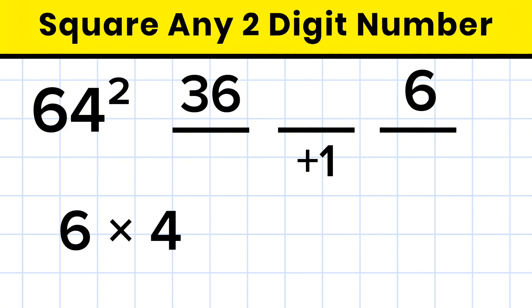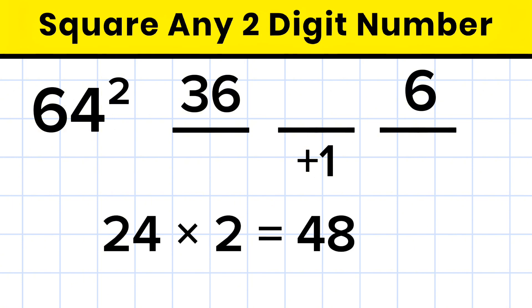Write 6 at the end and carry 1. So 6 times 4 equals 24. Then 24 times 2 equals 48. And now we'll add that carry. That is 48 plus 1 gives us 49.